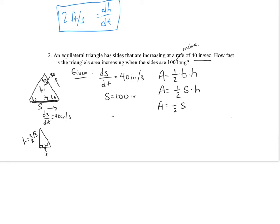The reason I'm substituting everything in terms of s is because I don't know dh/dt and I'm not given any information about it. If I differentiated with h still in the formula, I'd get stuck with an extra variable. So I substitute the height as s over 2 times root 3, and the area formula simplifies to root 3 over 4 times s squared.